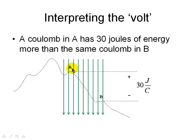On the other hand, if there is a Coulomb in A in the high point and we let it slide downhill, that Coulomb delivers 30 joules of energy. And that's the meaning of that.